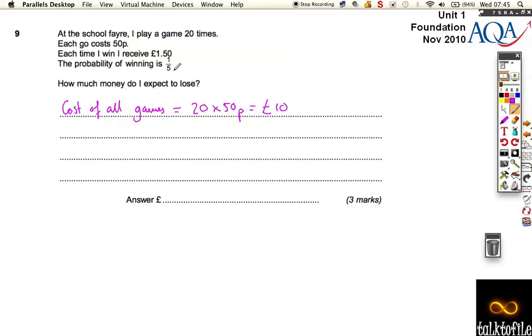Now, if the probability of winning is 1/5, then 1/5 of 20 of all the games I play is equal to 4 wins. So I expect to win 4 times. Now, if I do win, I get 4 times £1.50, which is £6.